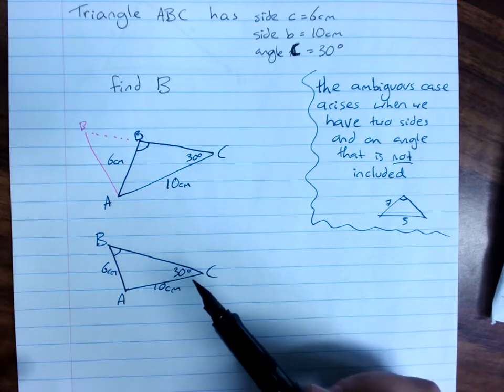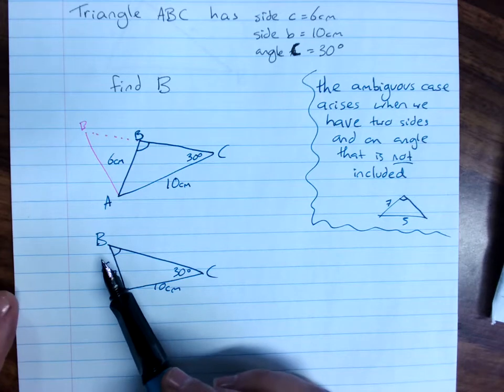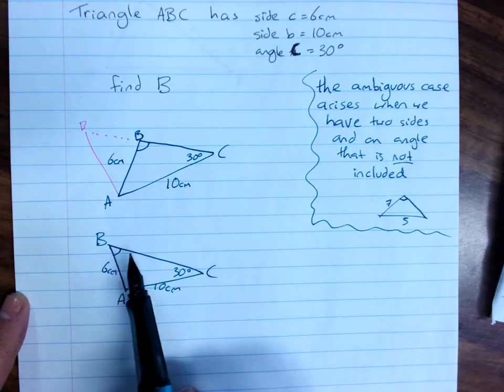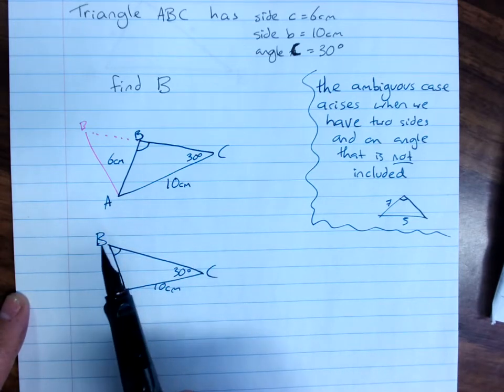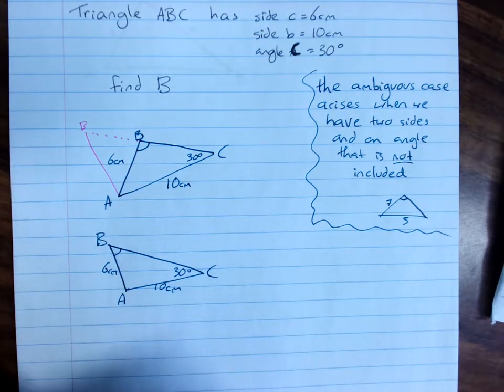Often it'll be clear in the question, they might say find acute angle B or it might be drawn in such a way that it's clear that it has to be acute. Don't get too tricked though if they're not to scale. But with just this information, my only option is to give two answers.